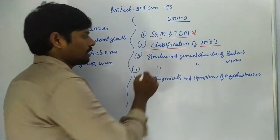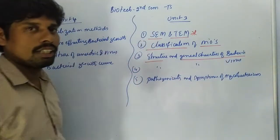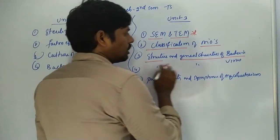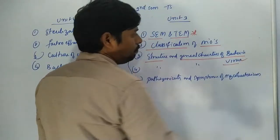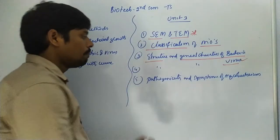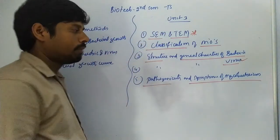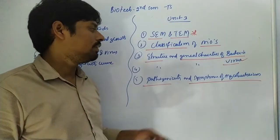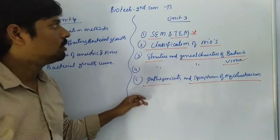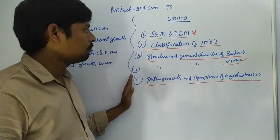Third important question: structure and general characters of bacteria. Fourth: structure and general characters of virus. Fifth: pathogenicity and symptoms of Mycobacterium. This is the fifth important question in Unit 3 — actually 5 important questions in this unit.